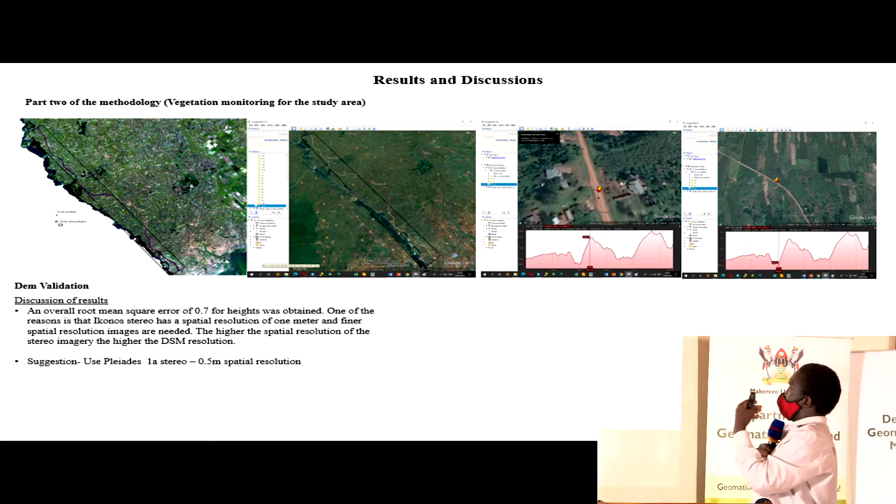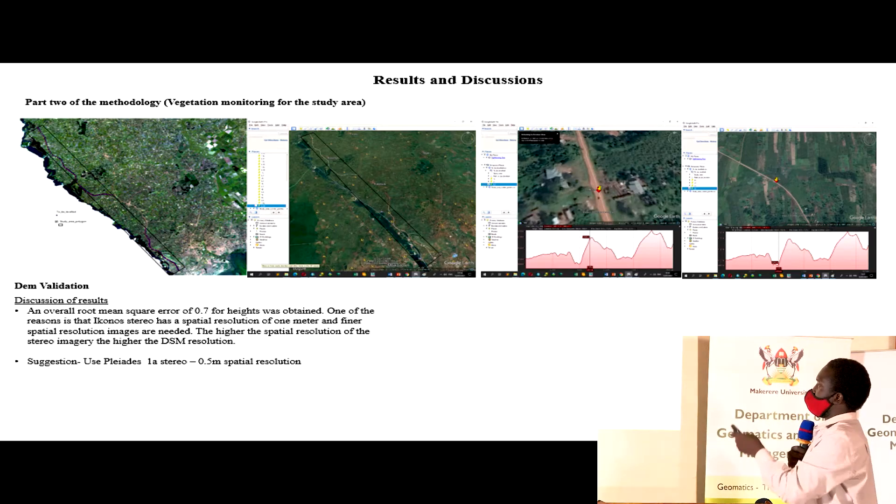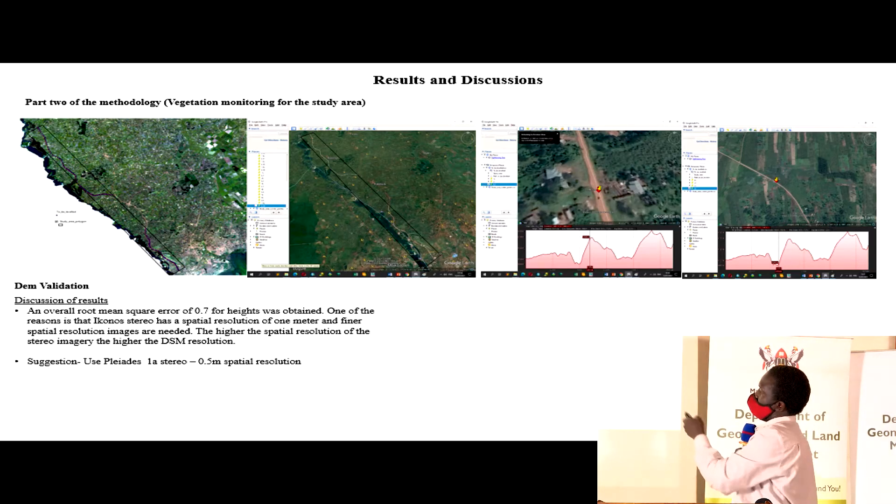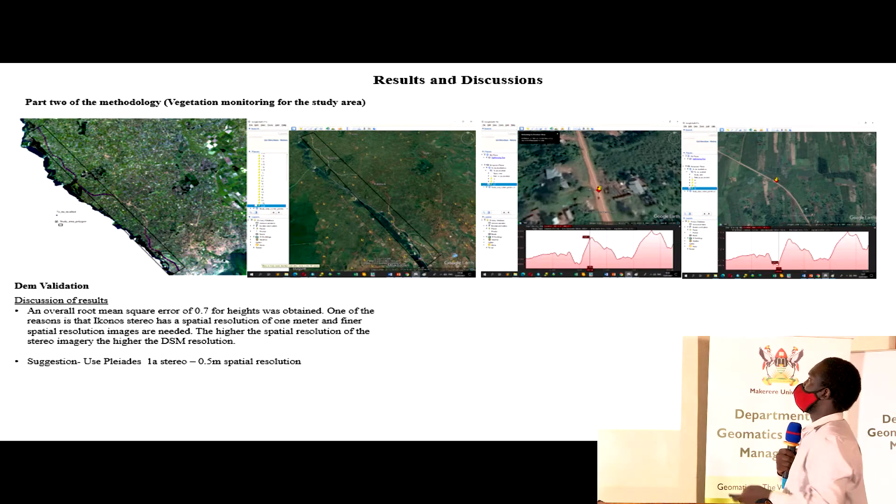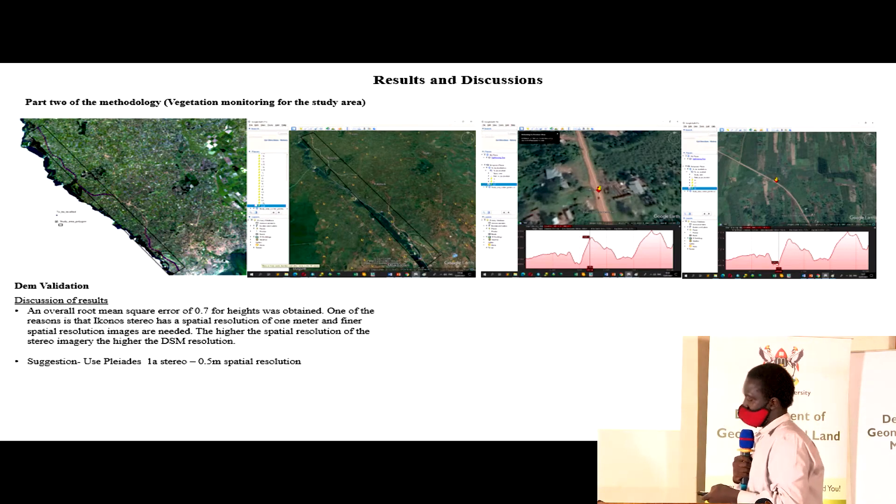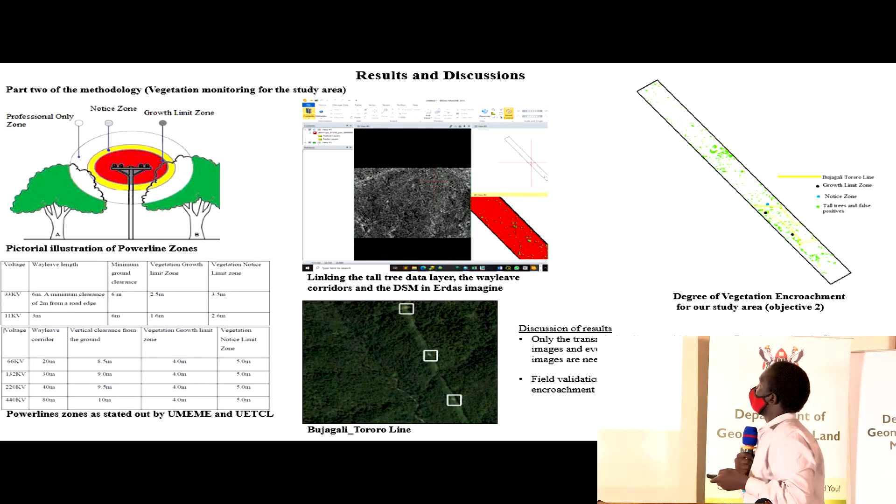The remedy would be using finer spatial resolution like Pleiades-1A stereo, which I couldn't access by then. We achieved objective one already—the digital surface model.